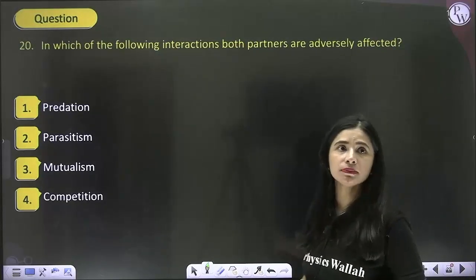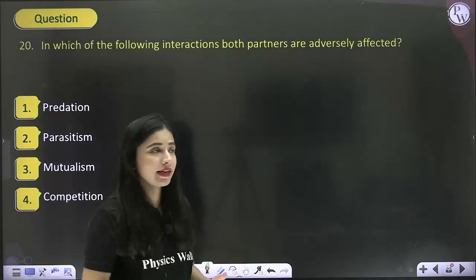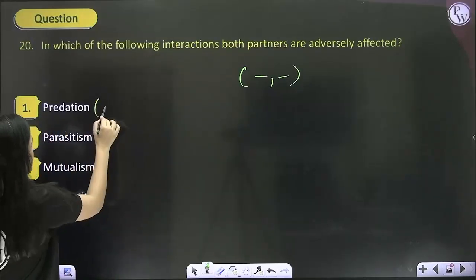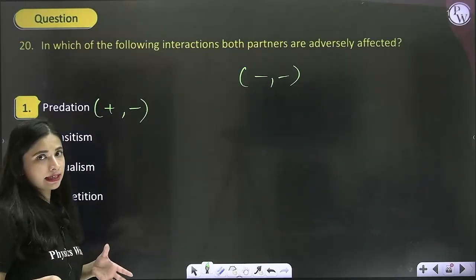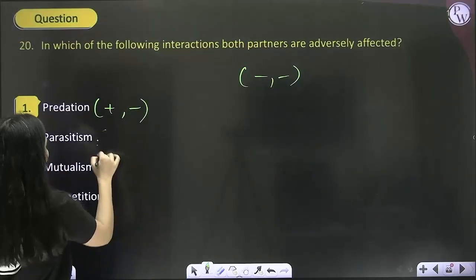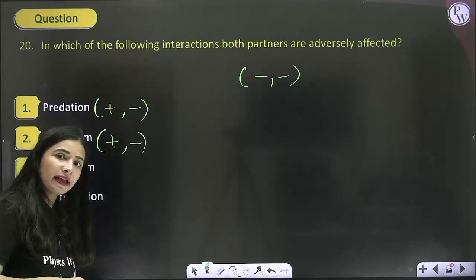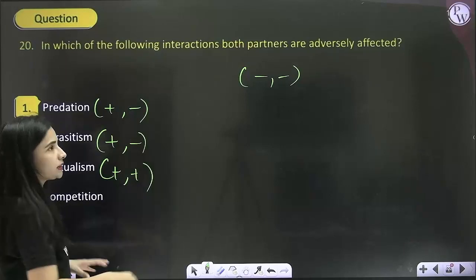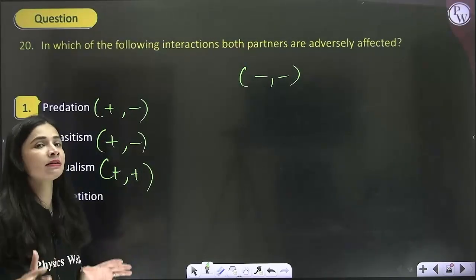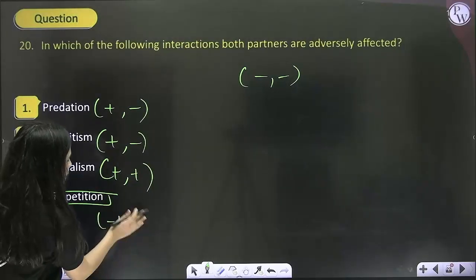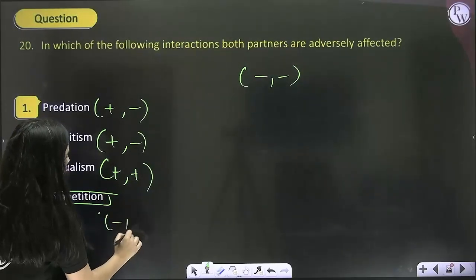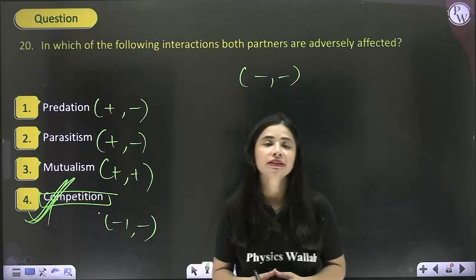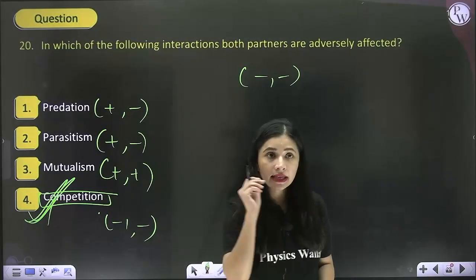In which of the following interactions are both partners adversely affected? That means a minus-minus interaction. In predation, it is plus-minus — one benefits, another is at a loss. Parasitism is the same — parasite benefits, host suffers. Mutualism is plus-plus — both are equally benefited, like lichens and mycorrhizae. But in competition, both species are equally adversely affected. So competition is the only population interaction where both species are harmed.